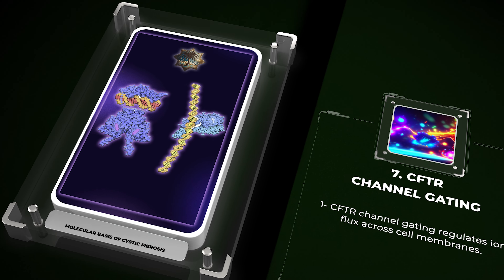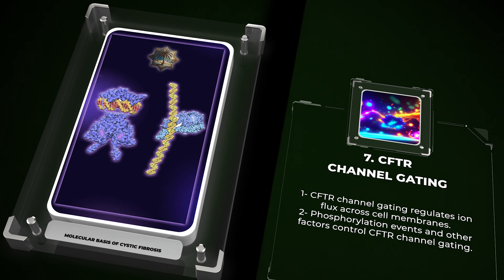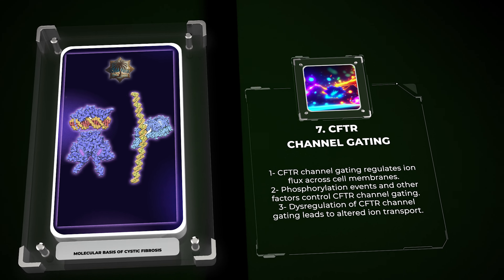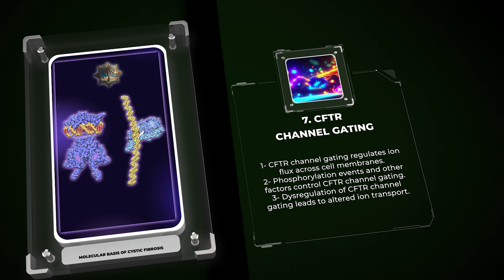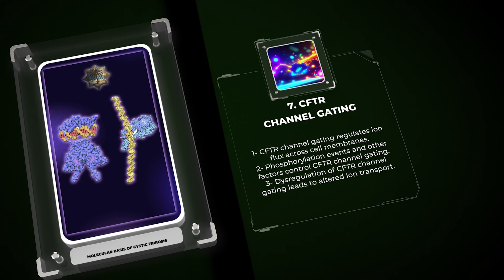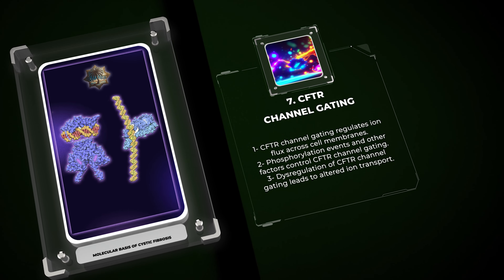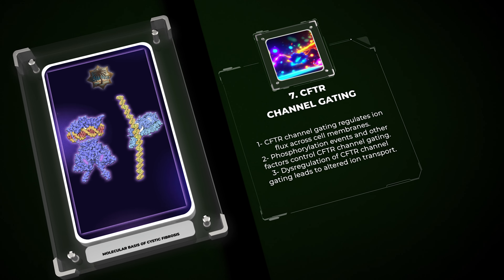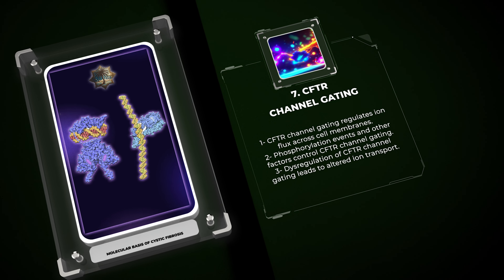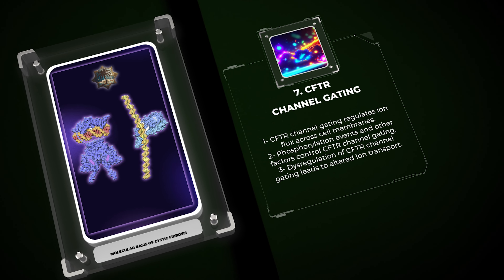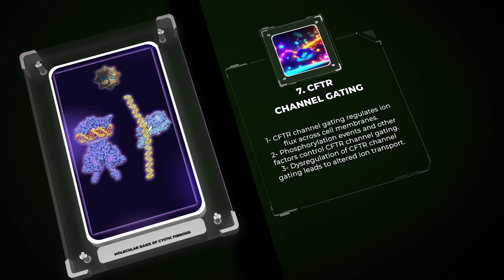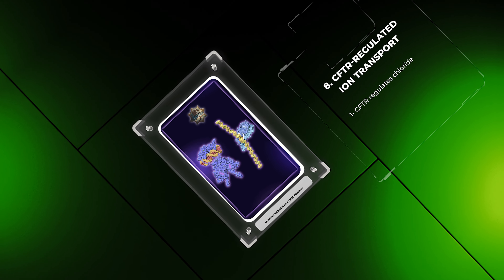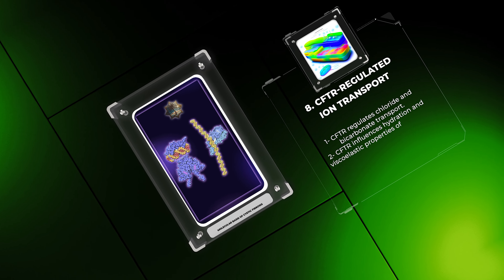CFTR channel gating refers to the opening and closing of the ion channel, which regulates ion flux across cell membranes. This process is tightly controlled by phosphorylation events and other factors. Dysregulation of CFTR channel gating can lead to altered ion transport, disrupting fluid and electrolyte balance in CF.